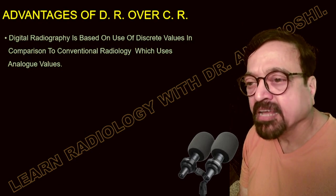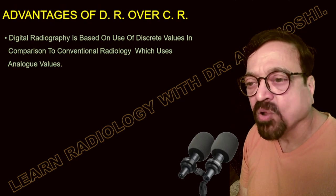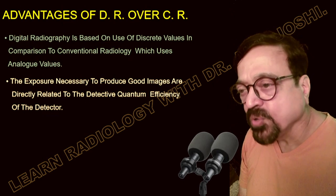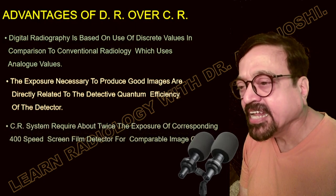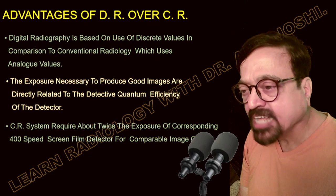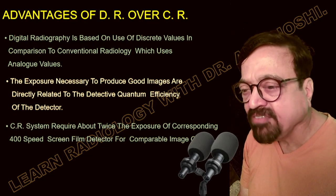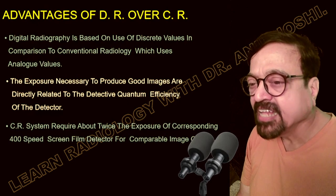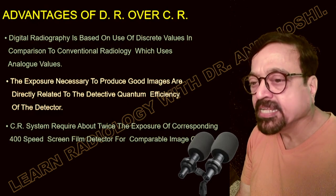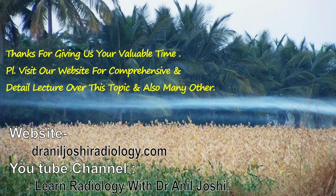DR is based on the use of discrete values, compared to conventional radiology which uses analog values. Exposures needed to produce a good image are directly related to the detective quantum efficiency (DQE) of the detectors — a better detector yields better image quality. CR systems require exposure equivalent to a 400-speed screen-film combination for comparable image quality. DR is therefore approximately 400 times faster, meaning less exposure to the patient, fewer repetitions, quicker positioning, faster throughput, and immediate image transfer to radiology for reporting.